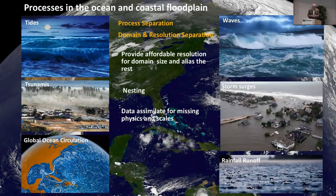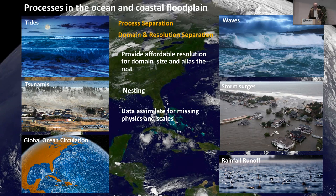Really, it's this scale separation, process separation. It's somewhat unfortunate that all these communities live in a bit of a silo, and it's nice to see them finally coming back together. Each community provides affordable resolution and covers the domain they can, aliasing or forgetting the rest, dealing with it through boundary conditions. A lot of nesting goes on within these model classes. I'm always a little bit scared of nesting because you have to do it really right unless you have a really diffusive model.